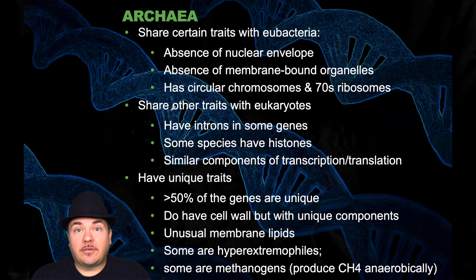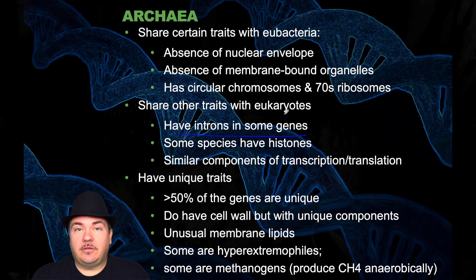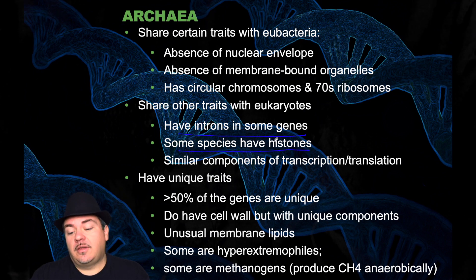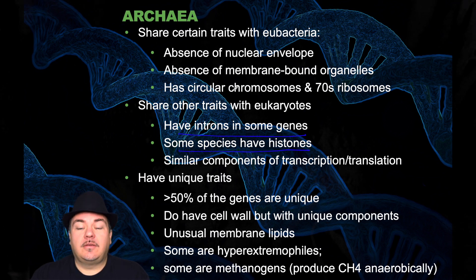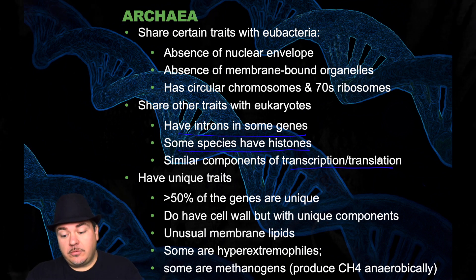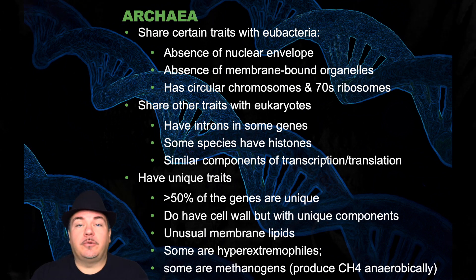But archaea do share some traits with eukaryotes. For example, they can have introns in some of their genes, whereas bacteria don't have introns. Some species of archaea have histones — proteins that wrap around the DNA — whereas bacteria don't have histones. And archaea have similar enzymes used for transcription and translation to eukaryotes, as opposed to bacteria.